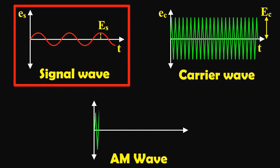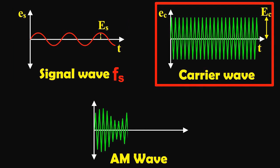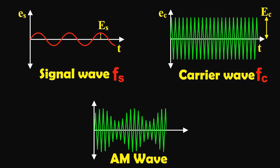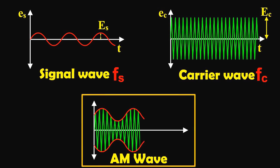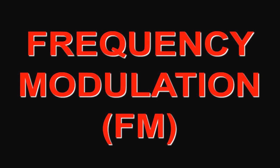The first visual shows the principle of amplitude modulation. The diagram also shows the audio electrical signal of frequency fs. The second visual shows a carrier wave of constant amplitude with frequency fc. The third visual is the amplitude modulated wave. It is to be noted that the amplitudes of both positive and negative half cycles of the carrier wave are changed in accordance with the signal. Thus the amplitude of the modulated wave possesses the frequency of the audio signal.